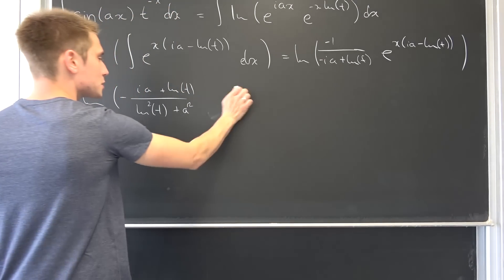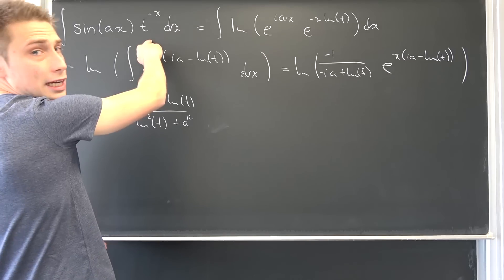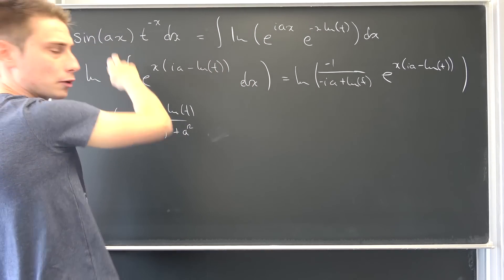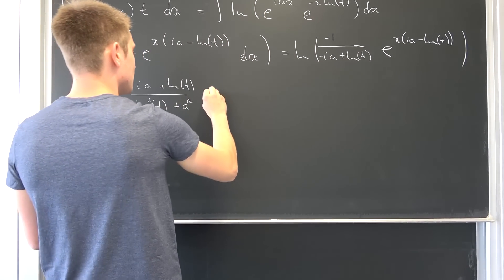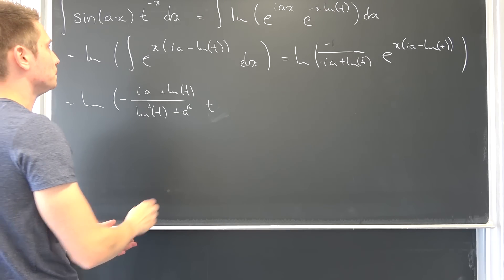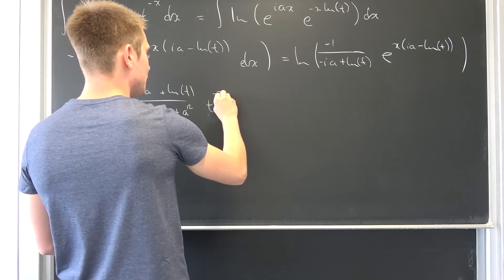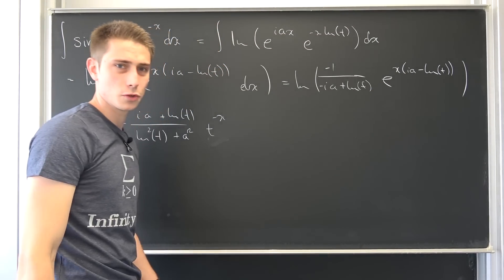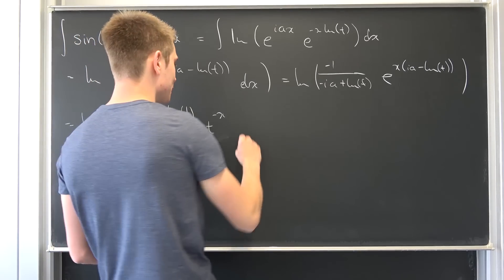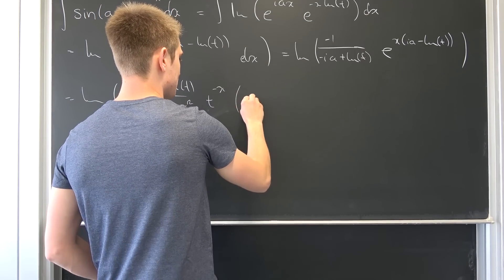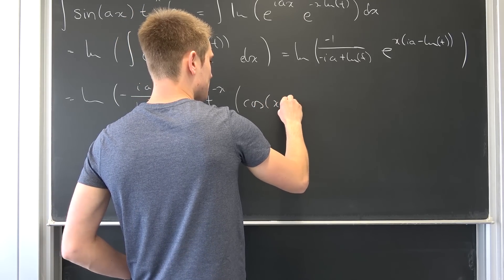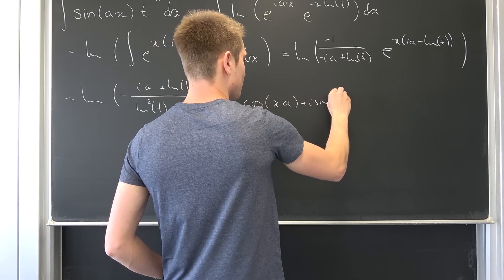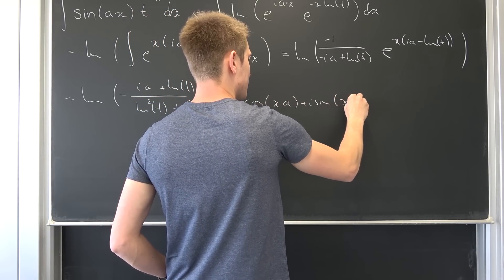We are going to write stuff out: we get t to the negative x, and then we break this apart once again to get t to the negative x and then e to the i·x·a, giving us cosine(x·a) + i·sine(x·a), closing off the parentheses.